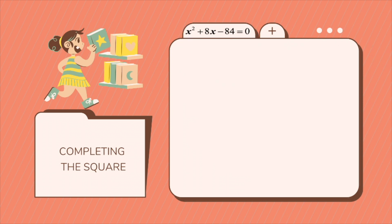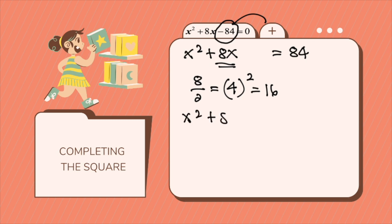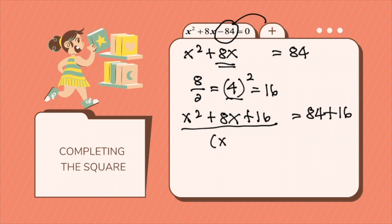Another example. Let's say we have x squared plus 8x minus 84 equals 0. The first step is to transfer minus 84 to the other side of the equation: x squared plus 8x equals 84. Then we find the number that will make this a perfect square trinomial by dividing the middle term by 2. 8 divided by 2 is 4, and squaring it gives 16. So we add 16 on both sides: x squared plus 8x plus 16 equals 84 plus 16. Then this becomes a perfect square trinomial, which is x plus 4, squared, equals 100.